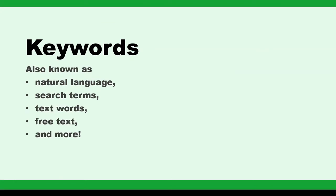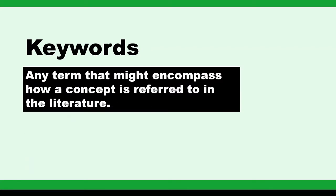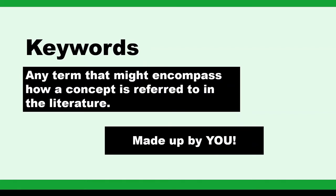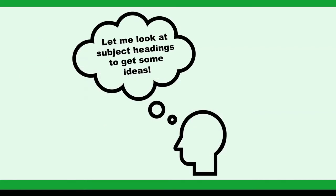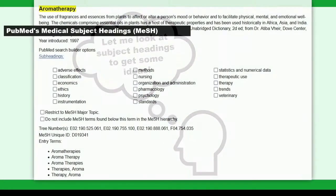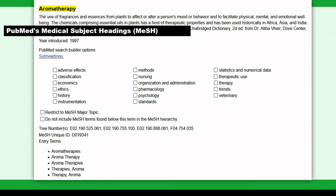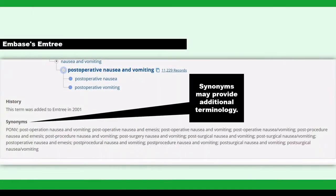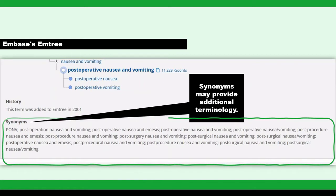Keywords are essentially any term that might encompass how a concept is referred to in the literature. Keywords, unlike subject headings, are not chosen from a thesaurus or database — they are made up by you and can be absolutely anything. If you've found an appropriate subject heading in one of your selected platforms, there will be a section for entry terms in PubMed's MeSH or synonyms in Embase's EmTree.